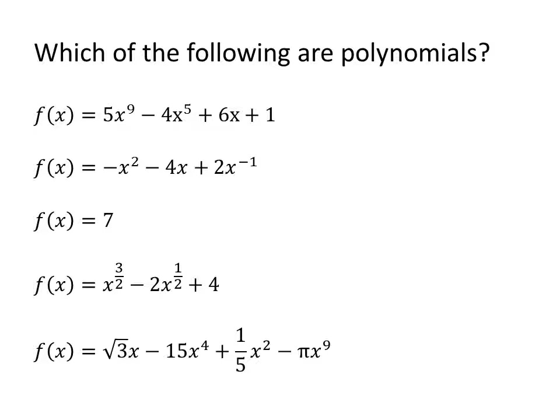The next function is also not a polynomial, because the exponents are fractions that can't be reduced to whole numbers. And finally, the last equation is a polynomial — even though it has different types of numbers for the coefficients, they are all real numbers, and all the exponents are whole numbers.